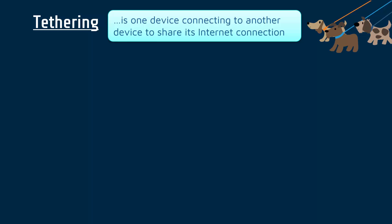You might tether yourself to a dog, like with a lead, as in that picture. So it does make sense — we've got this connection, they're linked. Tethering can be almost like a lead with a wire, so you can connect devices using a USB cable, though that's not something you see very often.